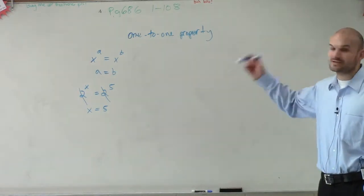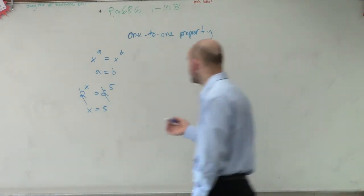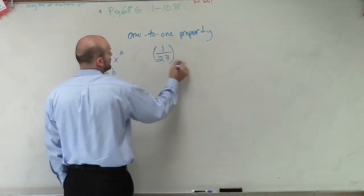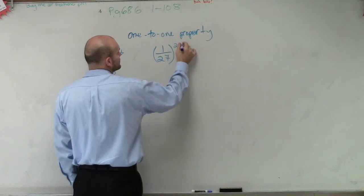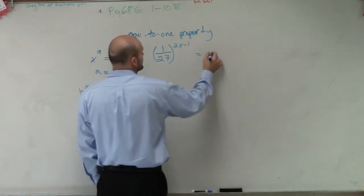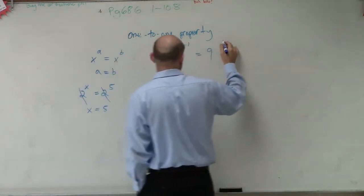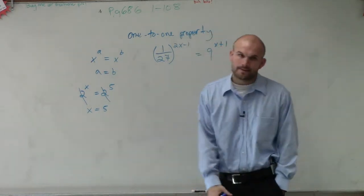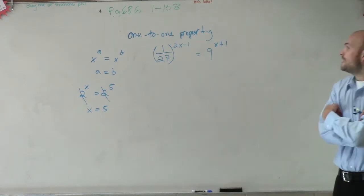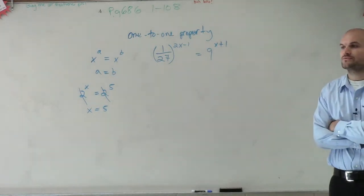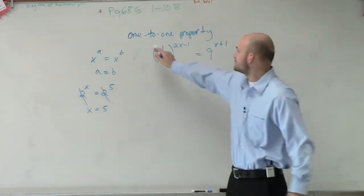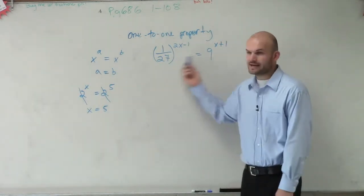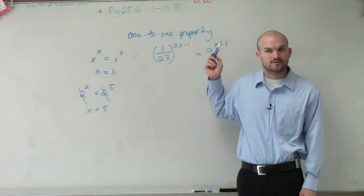But now, let's go and take a look at how we're going to apply that. So if I gave you guys an equation that maybe looked like this: (1/27)^(2x-1) equals 9^(x+1). Alright? So how would you solve that by not applying the one-to-one property? Well, you can't just say, oh, the bases are going to eliminate and then the exponents equal each other. Because right now, the bases are not equal to each other, are they? No.